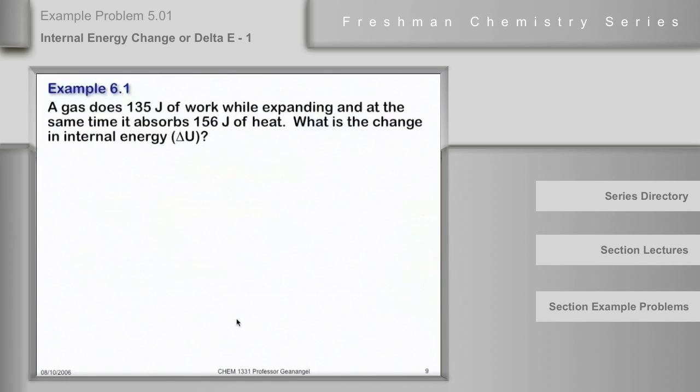Let's suppose we have a gas in one of these piston cylinder things, and it does 135 joules of work by expanding against the atmosphere, and at the same time it absorbs 156 joules of heat. What is the change in its internal energy?